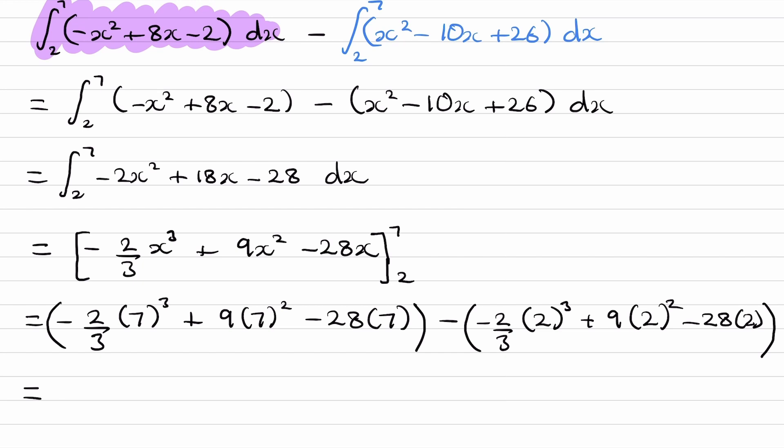So when you put in 7, you end up with 49 over 3, and when you put in 2, you end up with minus 76 over 3. So you want to do 49 over 3 minus what you get when you put in 2. So we're going to put this in the calculator again, and this gives us our answer of 125 over 3.